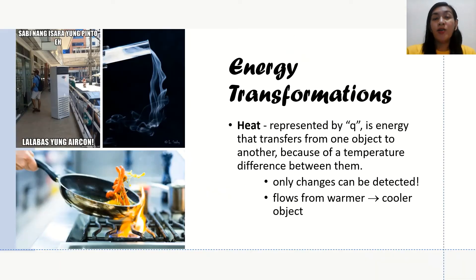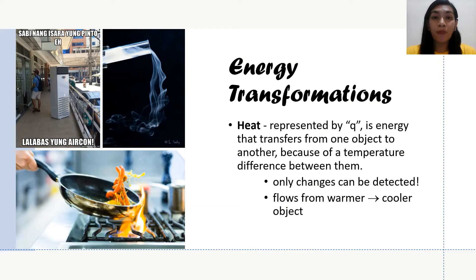To analyze energy transformations, we need to use heat. Heat is usually represented by the small letter Q and it is the energy that transfers from one object to another because of a temperature difference between them. In heat, only changes can be detected and it usually flows from a warmer surface to a cooler surface.